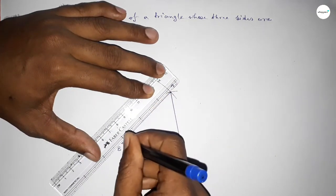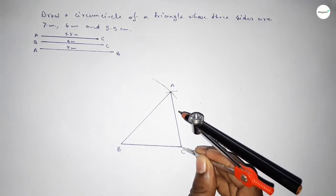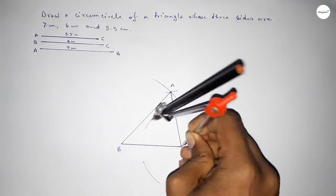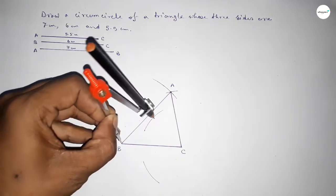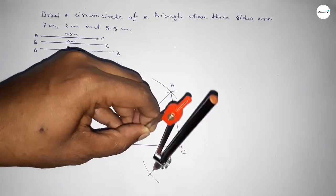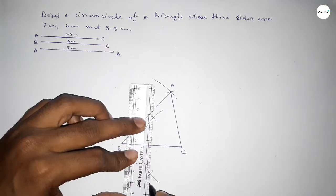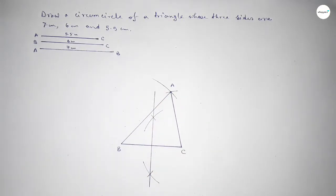Now we have to bisect the line BC. Taking greater than half of BC and drawing an arc, then with the same length putting the compass on the other end and cutting here. Both curves intersect at two points. Now joining this bisector.